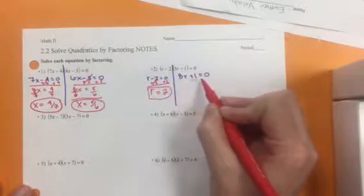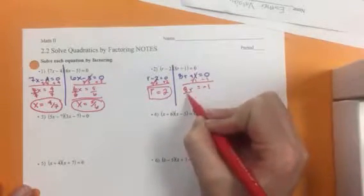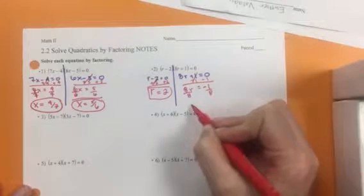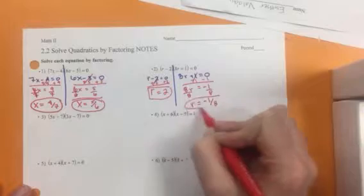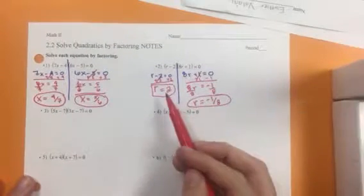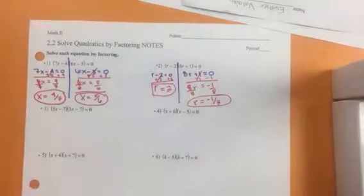I minus the 1 from both sides. Divide by 8. And r equals negative 1 over 8 as our solution. So we have two solutions because there are two r's in our equation.